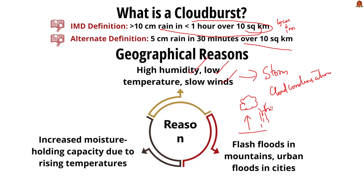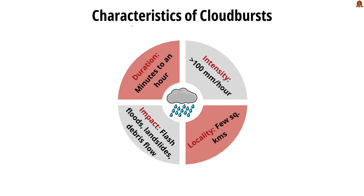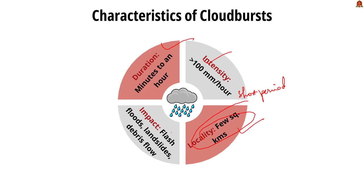The characteristics of cloudburst include: first, intensity — it has extremely heavy rainfall exceeding 100 mm per hour concentrated in a very short period. Second, locality — it is highly localized, typically affecting an area of only a few square kilometers.